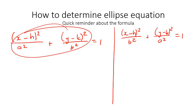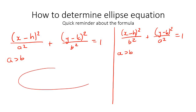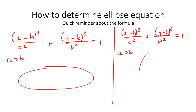We said that a is always bigger than b for an ellipse. So when the a is with the x, then it's a horizontal ellipse. And when the a, which is the bigger one, is with the y, then it's a vertical ellipse.